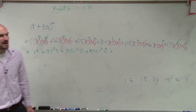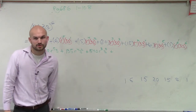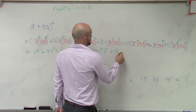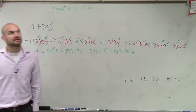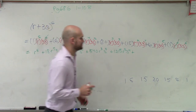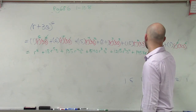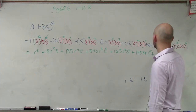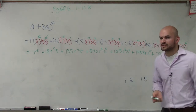Plus 3 to the 4th power, which is 81. So 81 times 15 is 1215. That gives us 1215r^2s^4. Plus 3 to the 5th power, which is 243. And 243 times 6 is 1458. That's going to be 1458rs^5. And then the last one is 3 to the 6th power, which is 729. That's your binomial expansion — the final answer.